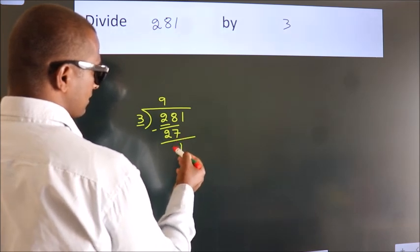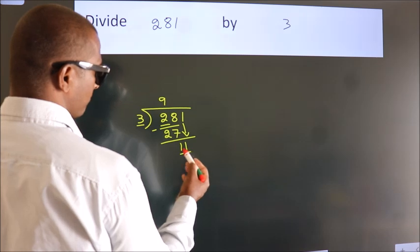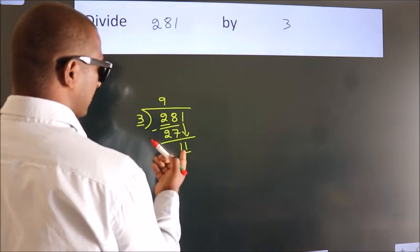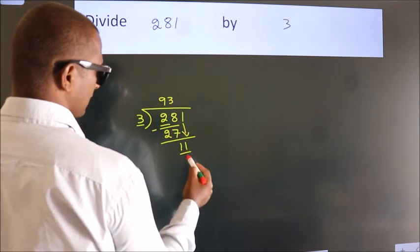After this, bring down the beside number, so 1 down. So 11. A number close to 11 in the 3 table is 3 times 3 equals 9.